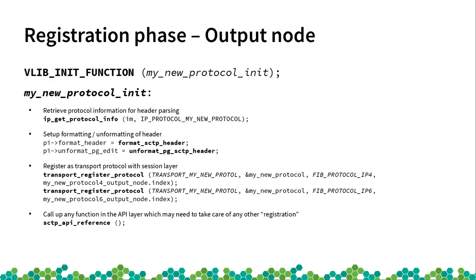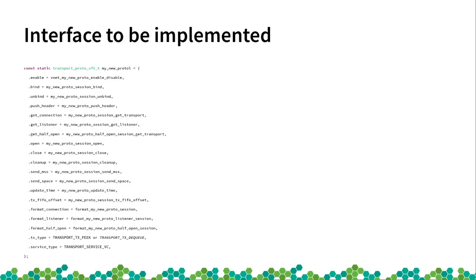So this structure, which is quite complex to read because there are many rows, is the one that allows you to hook up a new implementation into VPP.